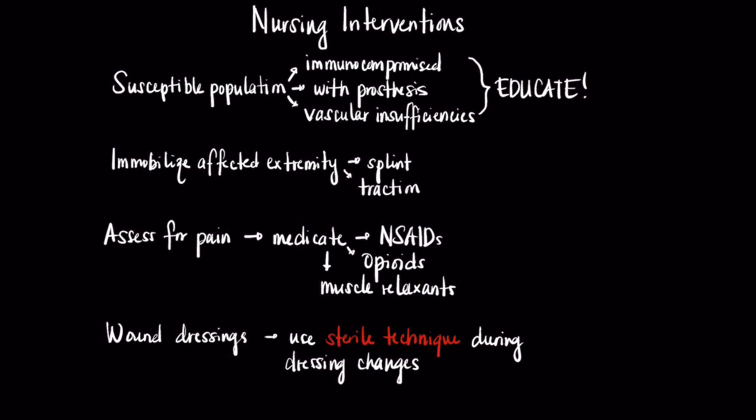With regard to nursing interventions, it's important to first identify patients who are at higher risk for osteomyelitis, such as the immunocompromised, those with prosthetic devices, and patients with vascular insufficiency such as diabetics. It's important to educate these patients regarding the signs and symptoms of osteomyelitis and to highlight that they need to report these symptoms right away to their provider so that prompt treatment can be started.